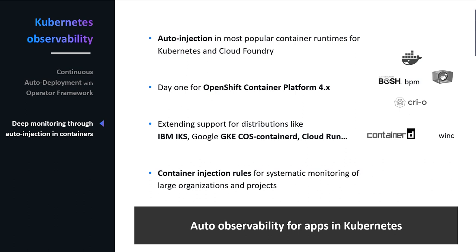In very large environments, you want to control how to actually monitor applications. Large environments typically have dev spaces or namespaces where teams don't want to opt into monitoring yet. This is why we came up with a new concept called Container Injection Rules, which allows you to control in which pods and containers you'd like to inject an agent. The OneAgent evaluates the rules you define, and based on those rules, it injects code modules — the Java, Go, or .NET code module — into those containers.